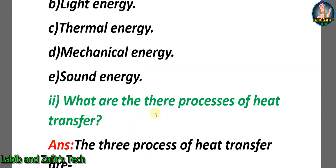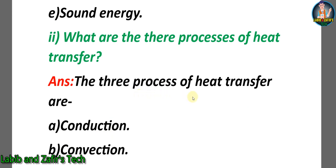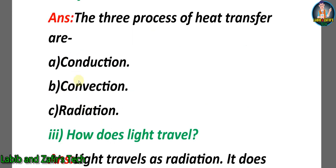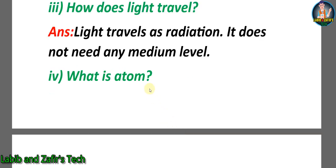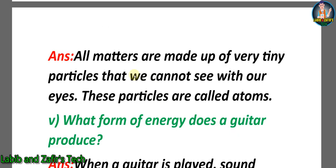Number two: what are the processes of heat transfer? Answer: the three processes of heat transfer are conduction, convection, and radiation. Third question: how does light travel? Answer: light travels as radiation. It does not need any medium. Number four: what is atom? Answer: all matters are made up of very tiny particles that we cannot see with our eyes. These particles are called atoms.